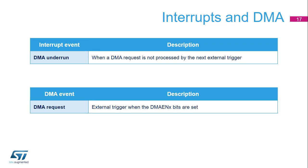To transfer data from memory, a DMA request can be generated. The DAC DMA request is not queued, so if a second external trigger arrives before the acknowledgement of the first external trigger is received, no new request is issued and an under-run flag is set that causes a maskable interrupt request.